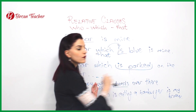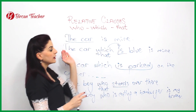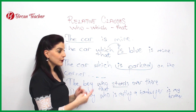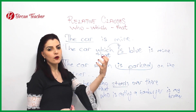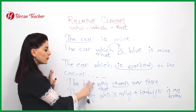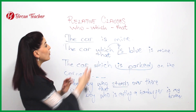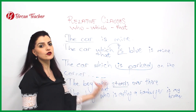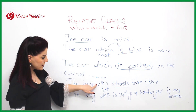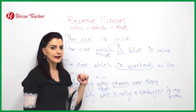'The boy who stands over there' — this is the adjective part. 'The car which is blue,' 'the car which is parked' — I am giving information about that object so you understand which object or which person I am talking about. In English, for people we use 'who'; for objects, animals, and other things we use 'which.' Or instead of 'who' or 'which,' we can also choose 'that.' So: 'the boy who stands' or 'the boy that stands over there.'